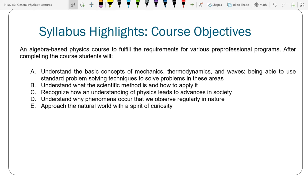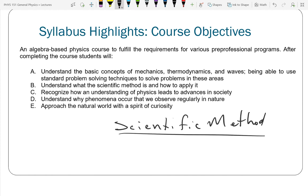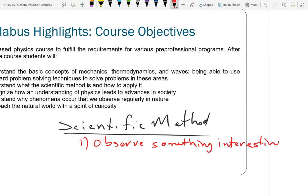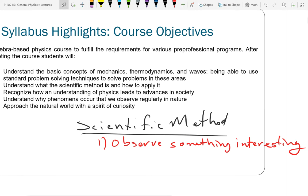Let me go over what the scientific method is. You'll find lots of statements of it that won't be in full agreement with what I say, but they're all fundamentally the same. The scientific method starts with observing something interesting. If you're going to be a scientist, you have to be curious. You observe something interesting — for example, the sun disappeared. Why did the sun go away? If you just say 'sun gone,' that's not the scientific way of thinking.